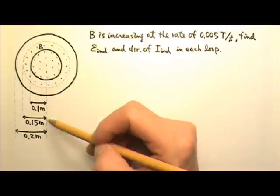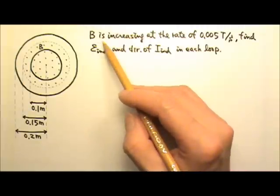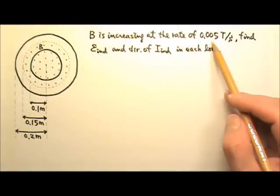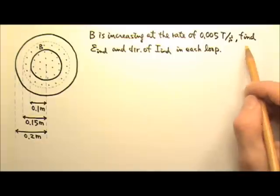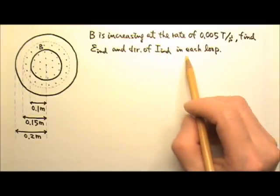The radius of the big loop is 0.2 meters. If the uniform magnetic field is increasing at a constant rate of 0.005 teslas per second, find the induced EMF and the direction of the induced current in each loop.